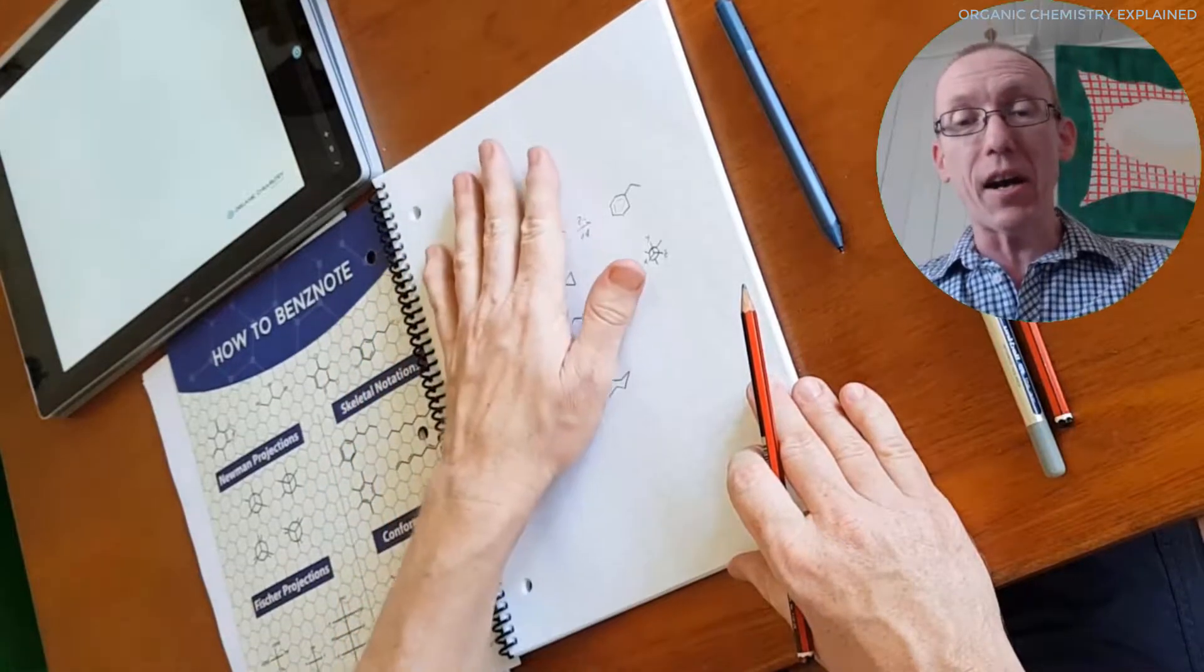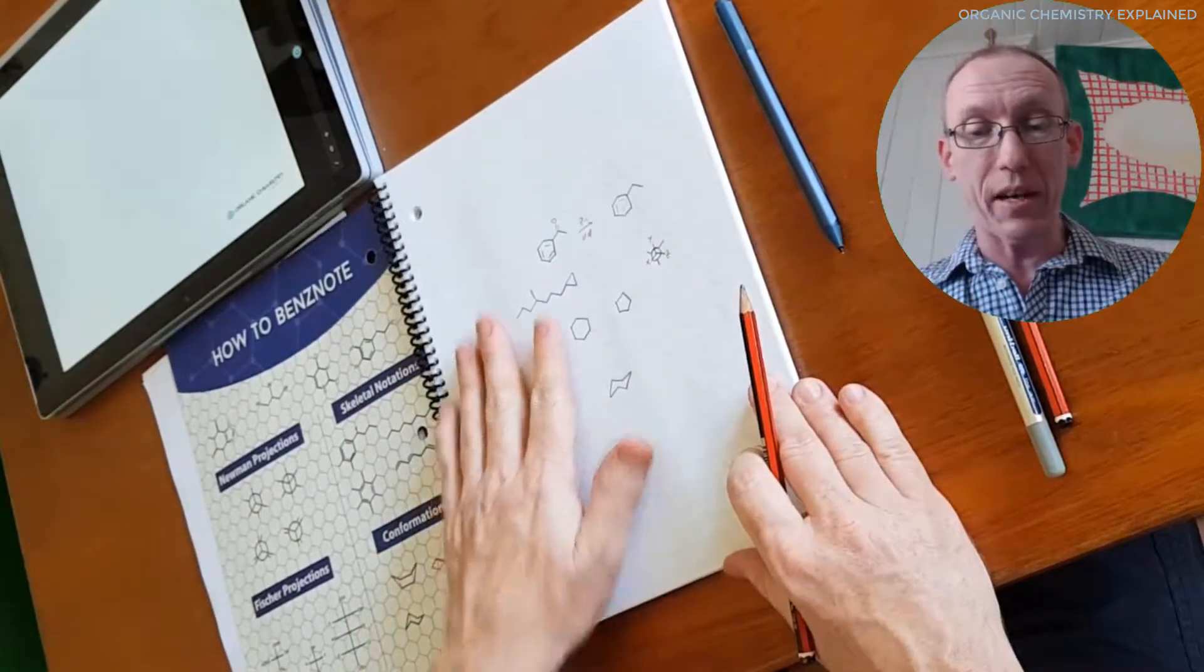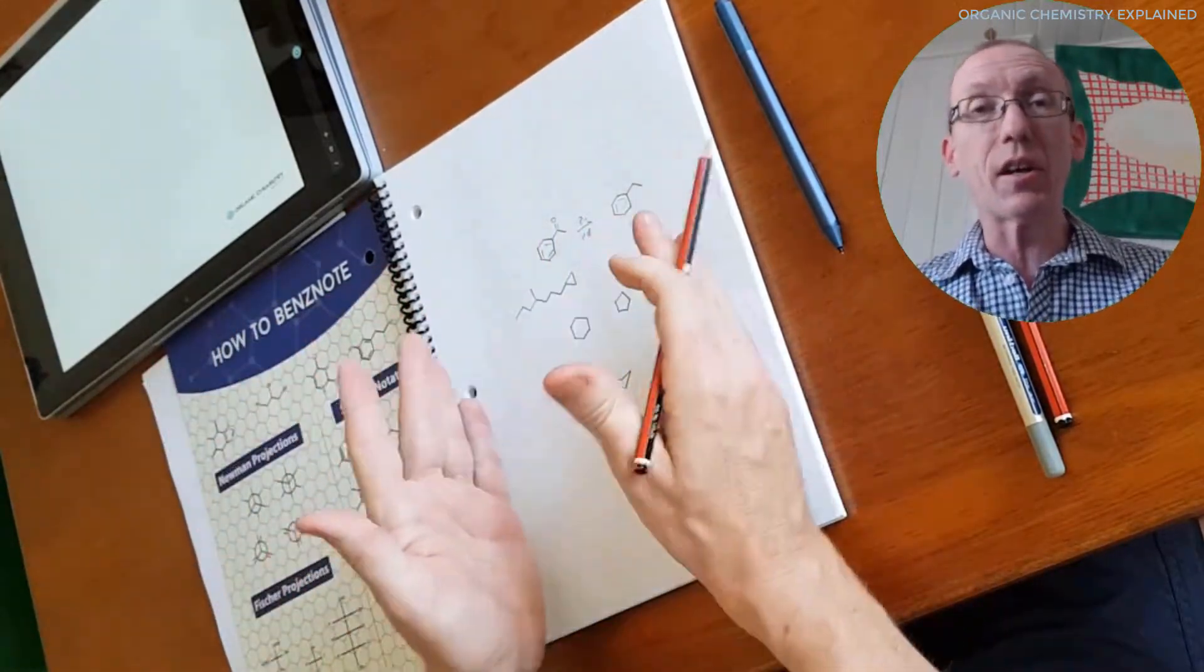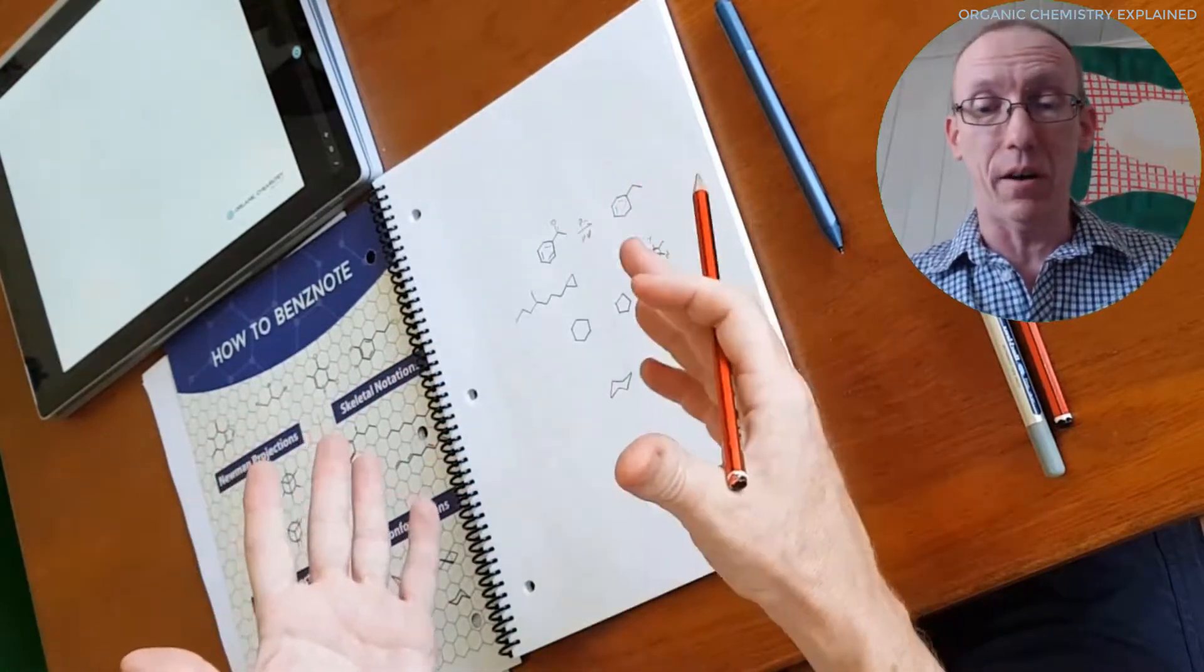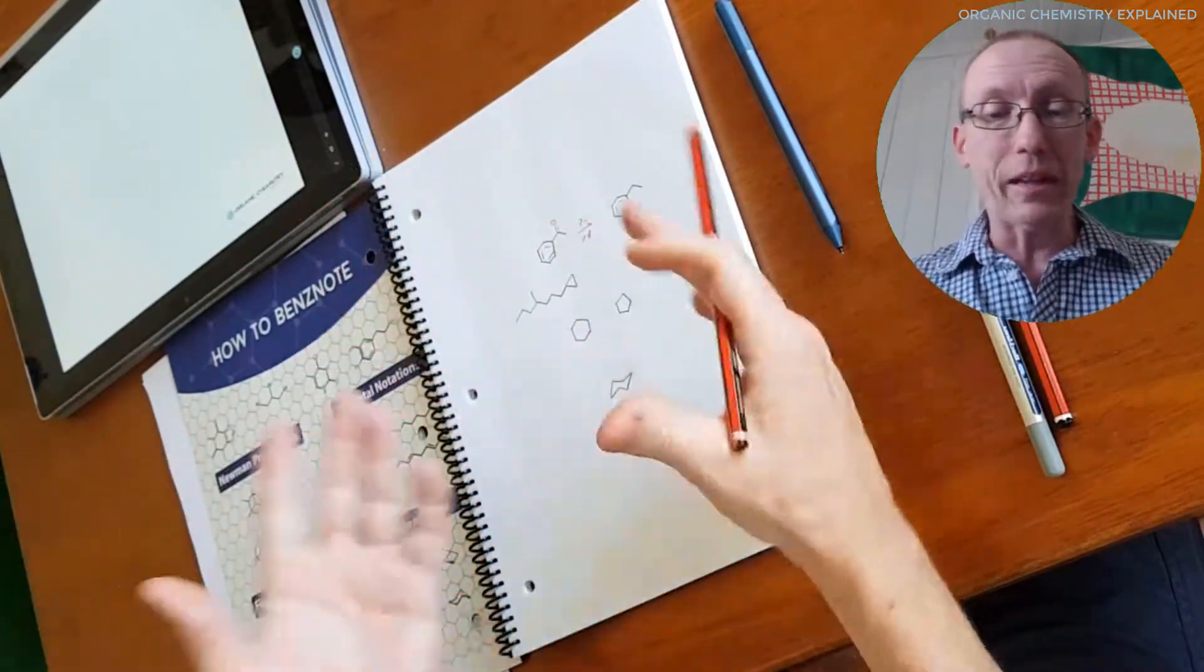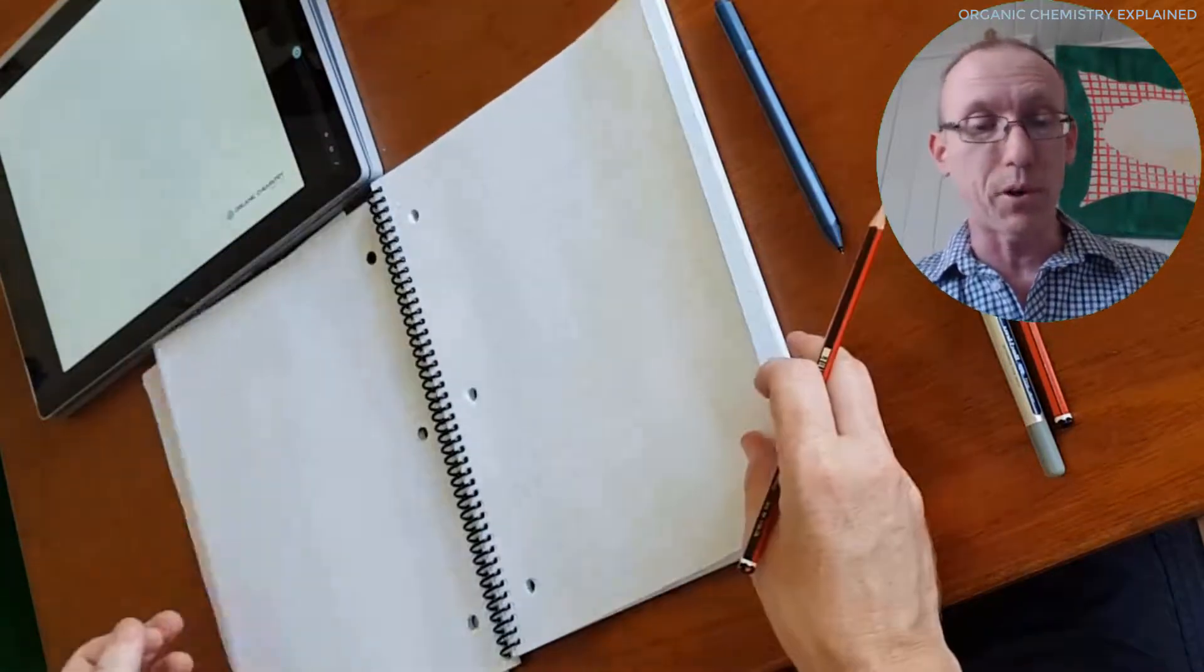Now, I decided when I made templates for organic chemistry structure drawing, I decided not to do hard copies like this because I didn't want to have the hassle of having to sort out logistics of supplying a physical product and so on.